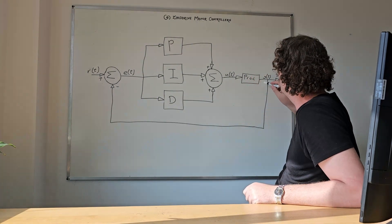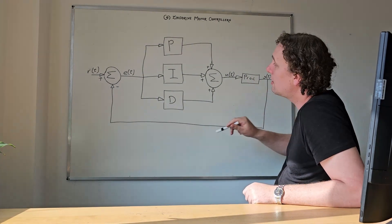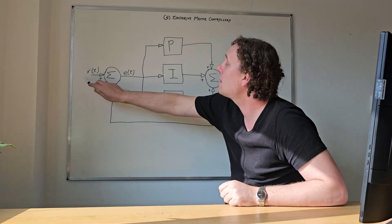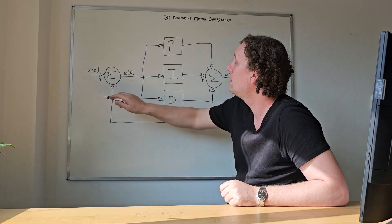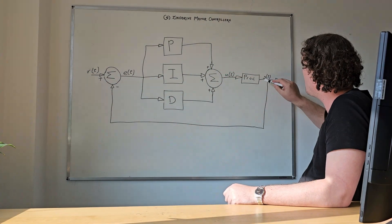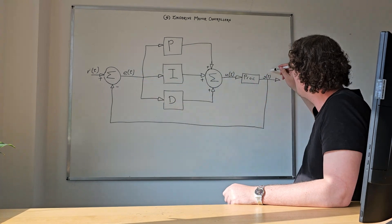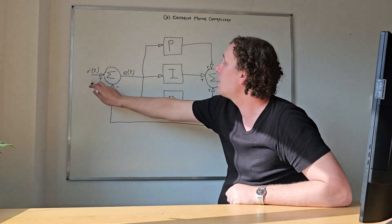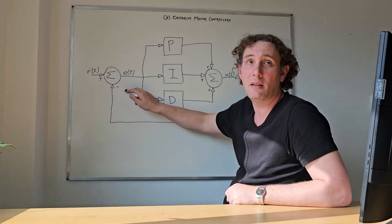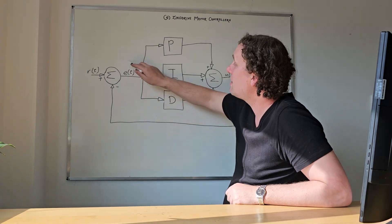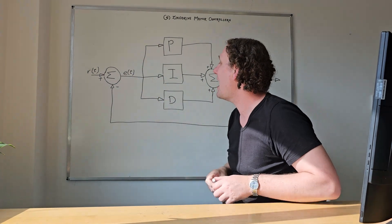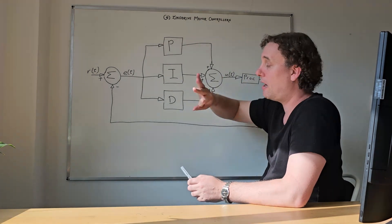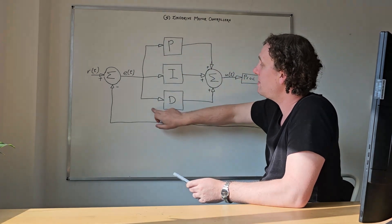As the target speed comes in, the error is measured — the error is over here. The error is measured by taking your target speed minus your actual speed; the error is calculated as a value. The same error then splits up into three different places.